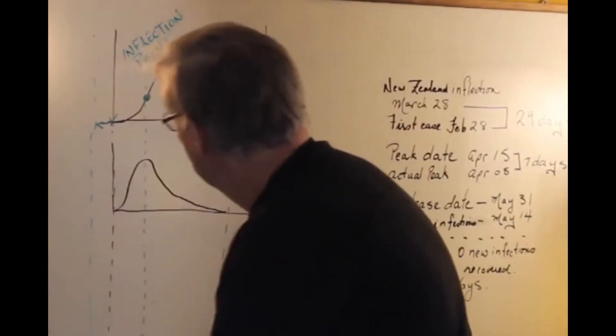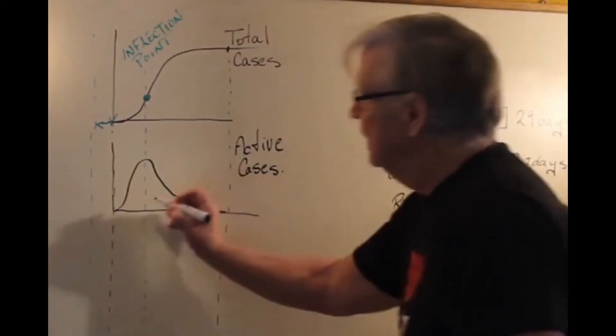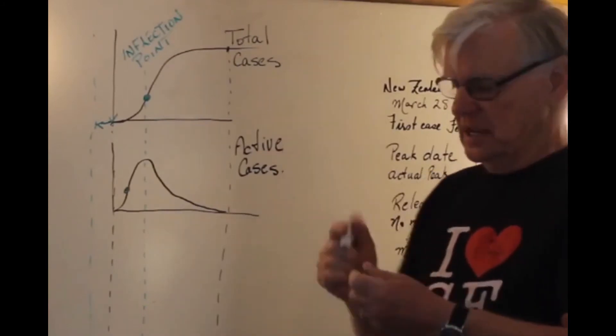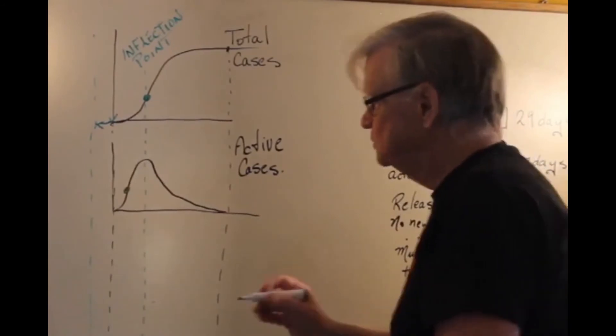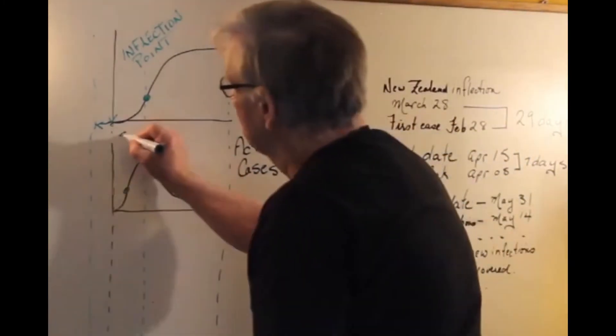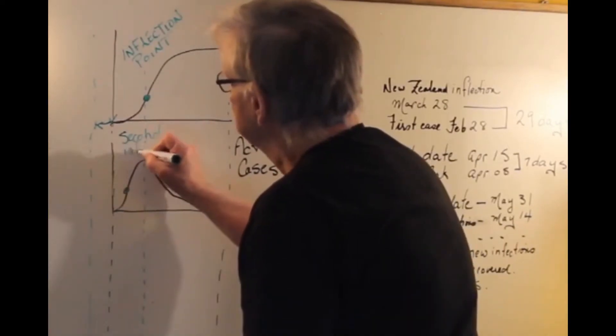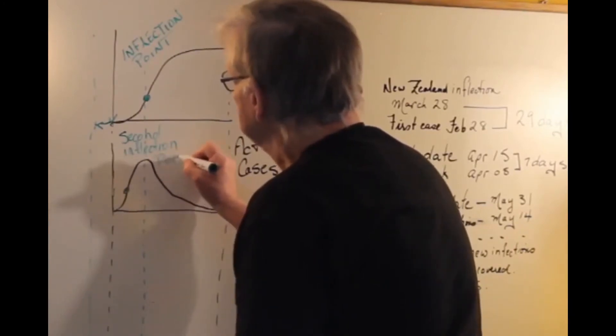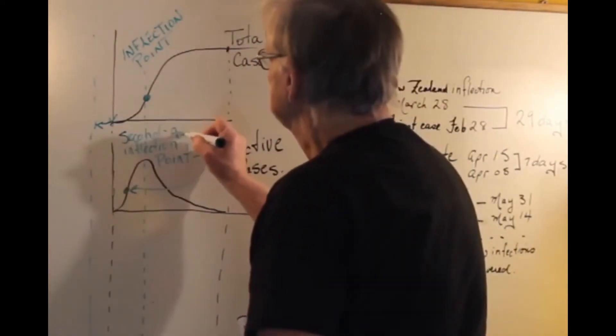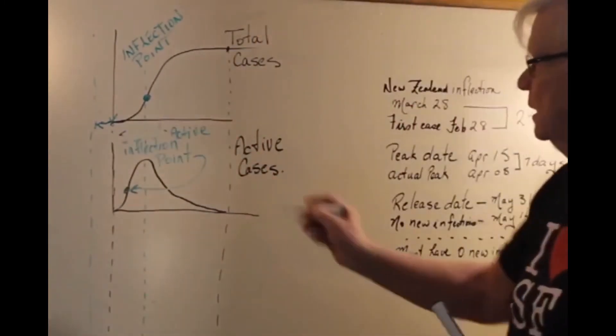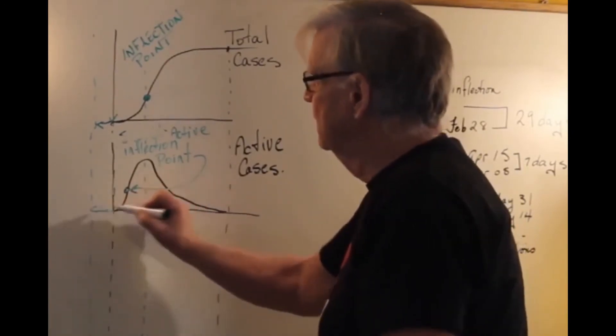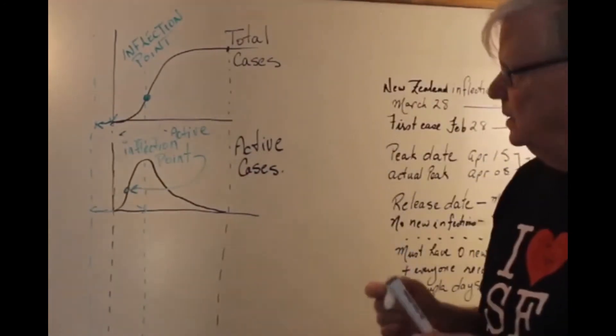The active cases will also have an inflection point here where it will start to kind of turn. In other words, the active cases will increase and then start to decrease. That does not mean you're over the hump. You're not over the hump until you get to this point. The way to find this may be a little difficult, this we'll call the second inflection point, or the active inflection point. The nice thing about that is that would be about the halfway point between these two points.